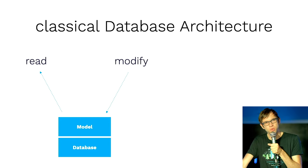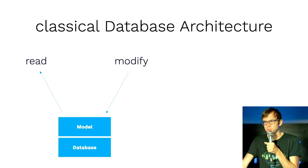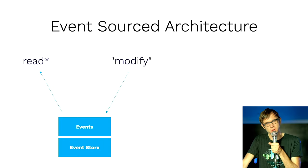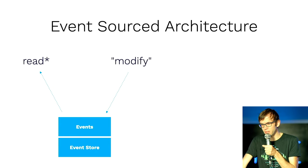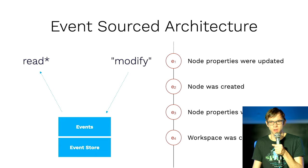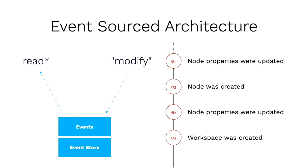In an event sourced architecture it looks pretty much the same — you just need to look closely at the labels. Instead of a database we use an event store, and instead of a model we use events. These events record all user intent and user actions — things like 'update node properties', 'node was created', 'workspace was created'. When we modify the event store we basically append new events step by step.